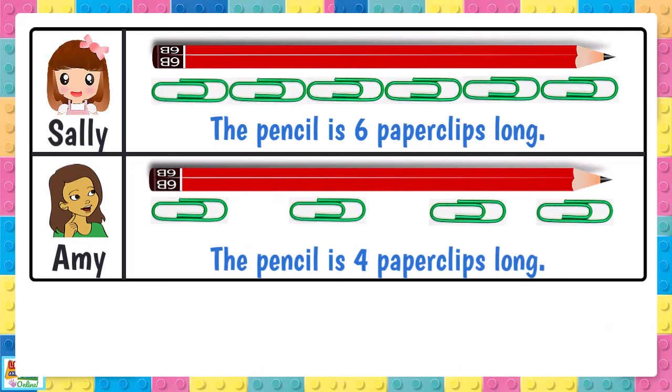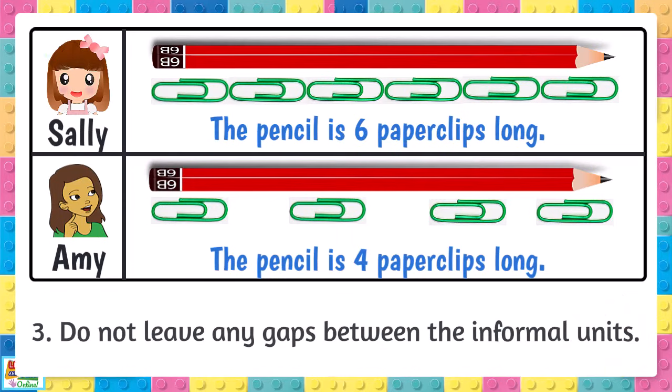Next time Amy tries, she needs to follow the third rule, which is not to leave any gaps between the informal units.